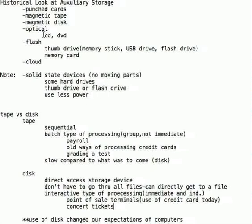I'd like to talk for a second about magnetic tape and magnetic disc and do a quick comparison. Tape was introduced in the 50s, and tape stores things sequentially in order. Tape lends itself to a special type of processing called batch processing, which is group processing — not immediate. Payroll is an example of batch processing. Documents were dropped off at the payroll company, and when the person got around to it, they processed all the checks in a group arrangement. It wasn't very immediate — maybe that day, that afternoon, or maybe the next day. Batch processing implies group, or not immediate.